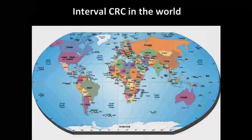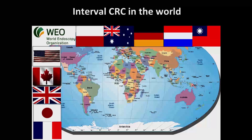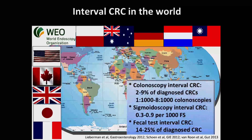Many studies around the world showed that the interval cancer rate can vary greatly. For example, colonoscopy interval cancer rate varies from 2 to 9% of all diagnosed cancers and from 1 in 1,000 to 8 in 1,000 colonoscopies. Likewise, flexible sigmoidoscopy interval cancer rate and fecal test interval cancer rate vary.